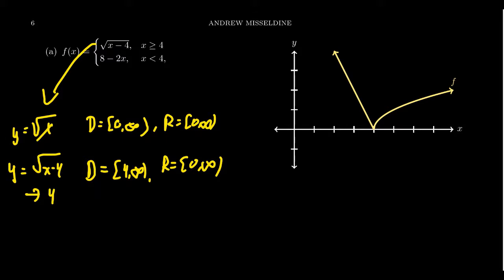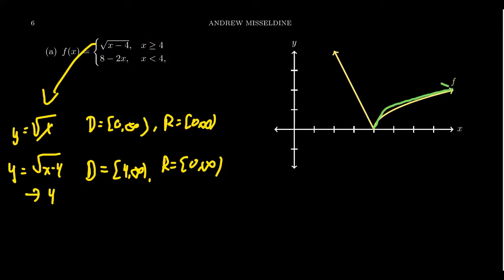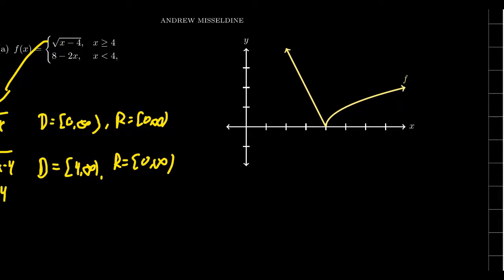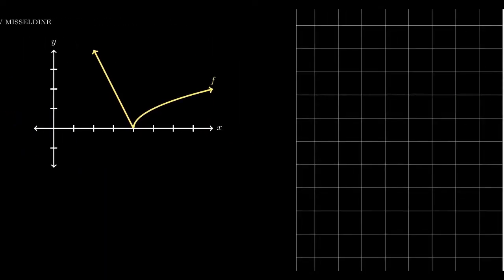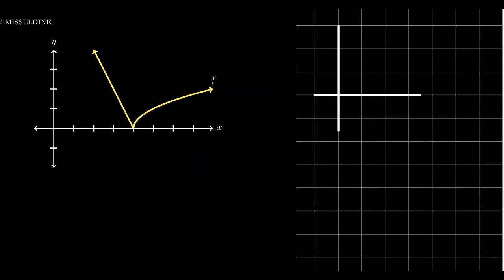When you take x greater than or equal to 4 — that's the domain of this whole piece — you're actually graphing the entire square root function, which you can see right there. So if I graph this thing with the y-axis and x-axis set up, counting off to 4 on the x-axis, you get the square root curve starting at x equals 4. That's what's happening.